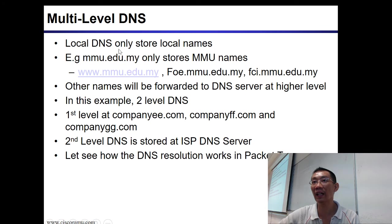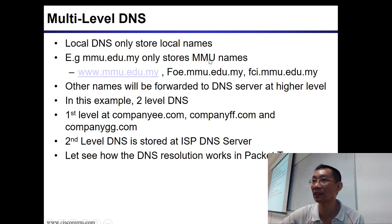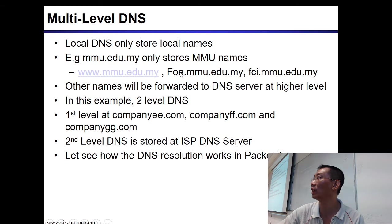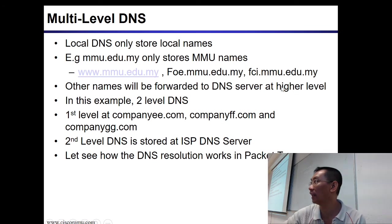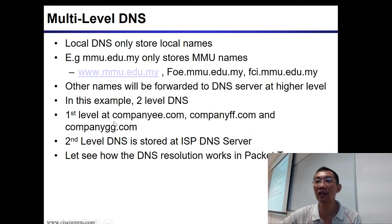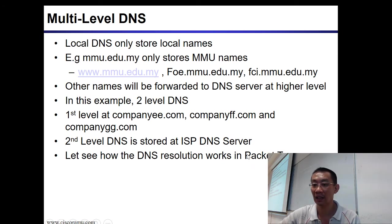The local DNS only stores local names. So the MMU DNS server will only store those few local names — it will not store UNITEN server names, because it doesn't know what names will be stored there. Other names will be forwarded to another DNS server at a higher level. In this case you have two levels: the first level is at the company level, and the second level is DNS stored at the ISP DNS server level.